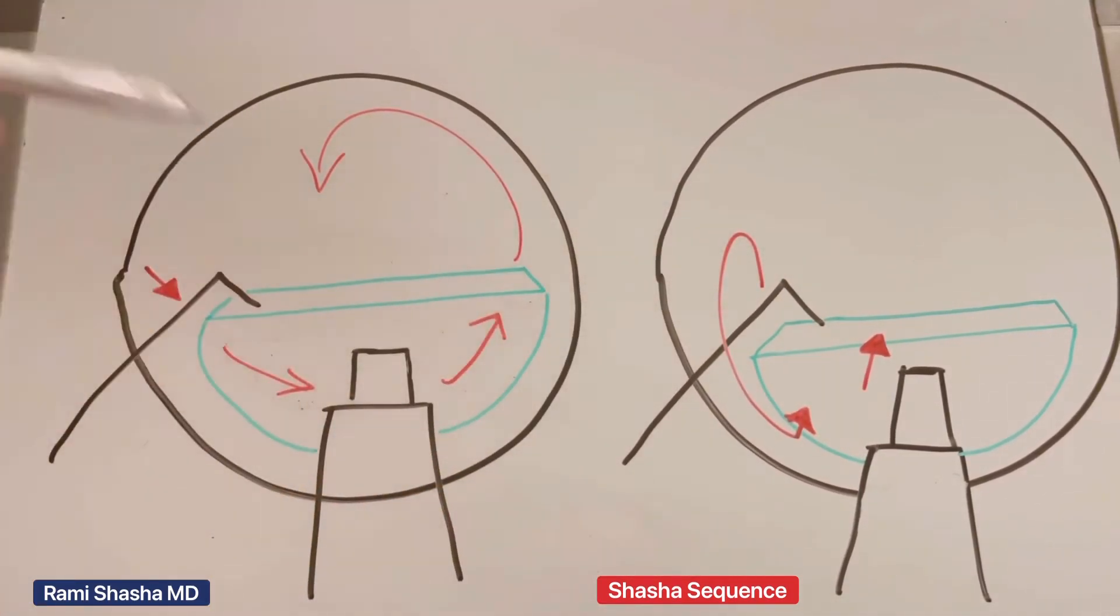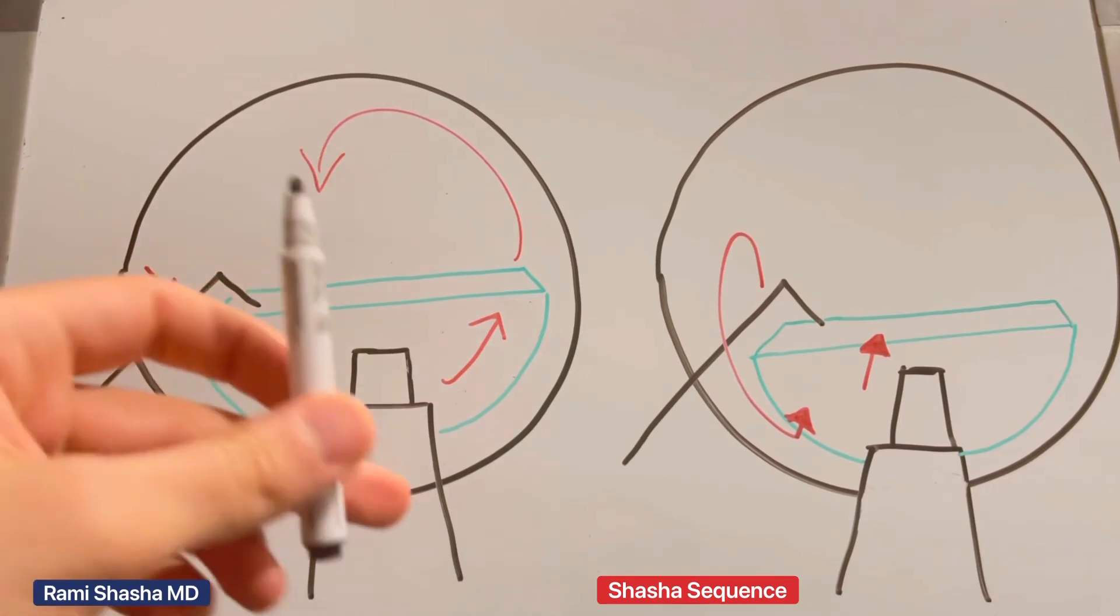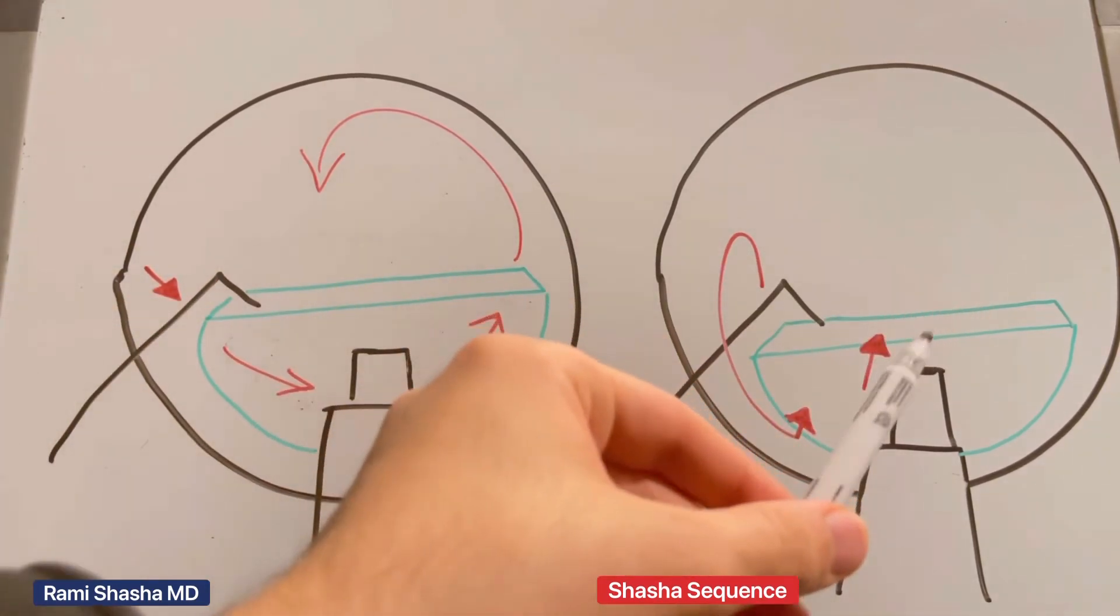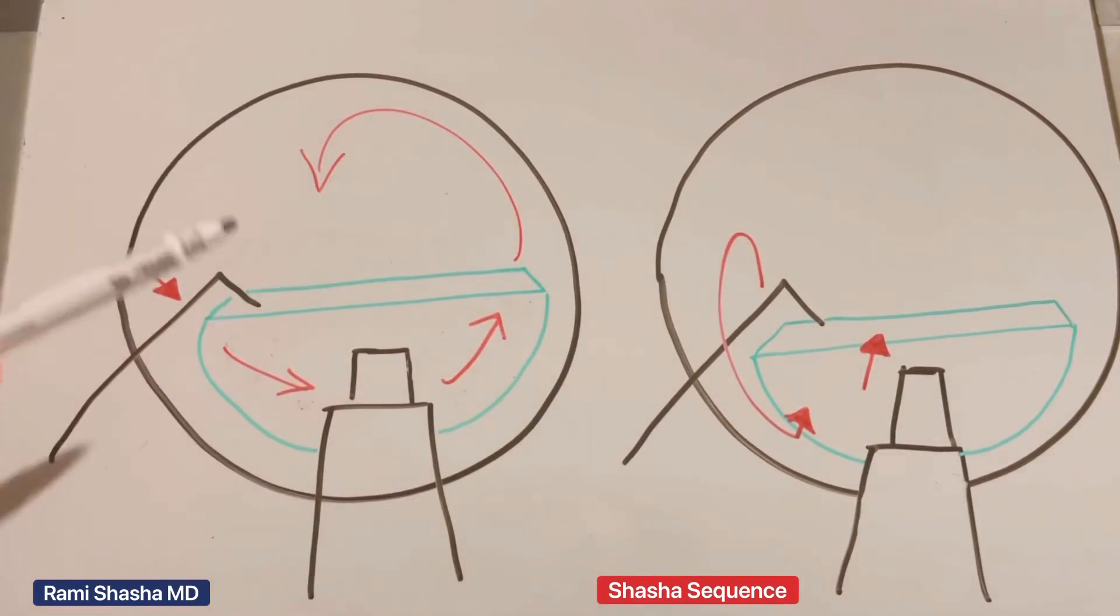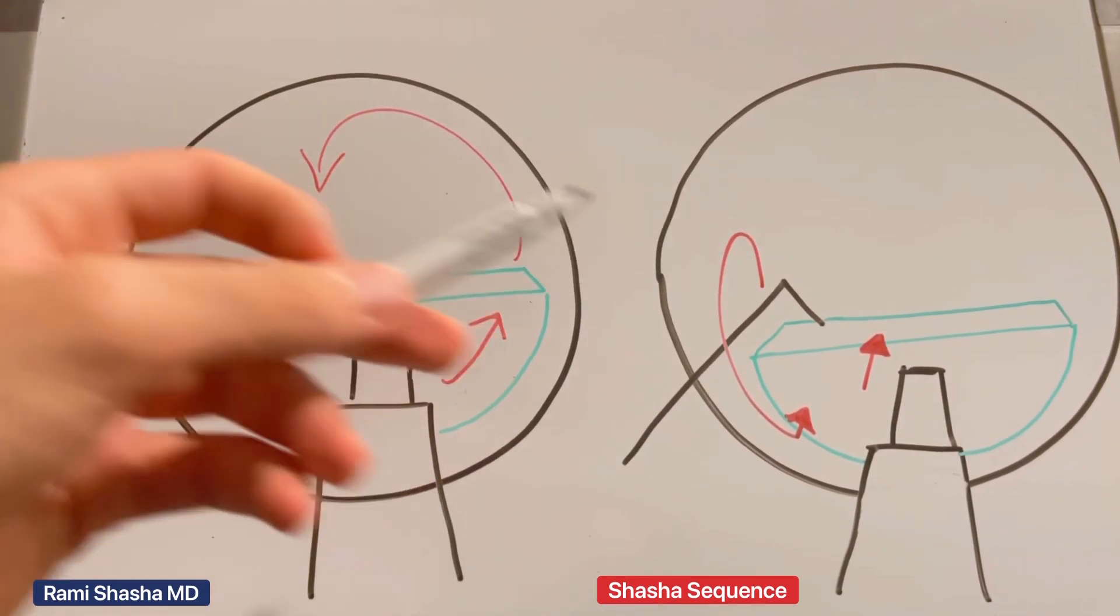As I've mentioned before, that'll tent the posterior capsule. All in all, this technique when done properly is much quicker than the technique where you're constantly having to rotate the endo-nucleus. I hope you found this comparative illustration useful. Thank you.